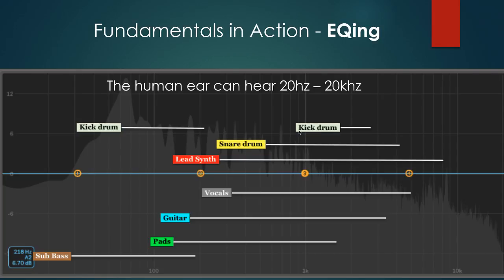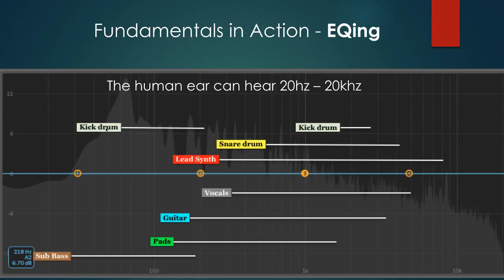The next thing is EQing. I created this visualization from Ableton's EQ8 device, showing where all the main instruments live in a mix. For example, your kick drum really lives around 100 Hz to about 150 Hz, and then again up around 1.5K where you get that punch — that top-end click of the kick drum. Your snare drum kind of lives in the middle range, your lead synths are usually living up higher, and your vocals too. Getting a good idea of where all the instruments in your mix live helps you EQ to those specific things.